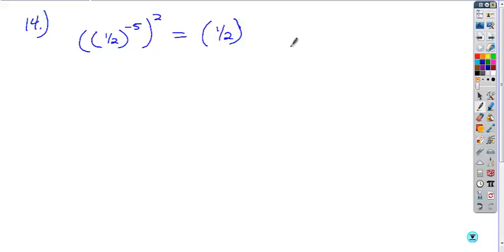So what happens when you take a power to a power? What do you do with the powers? Multiply. You multiply them. So what's negative 5 times 2? Negative 10. Okay. Everybody okay with that? Okay. Am I allowed to have a negative exponent?